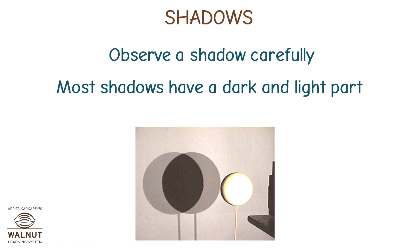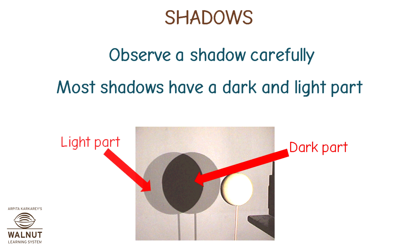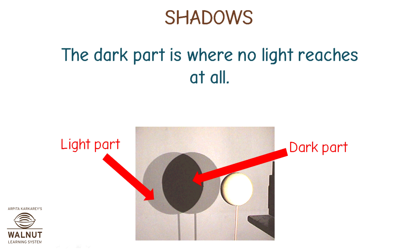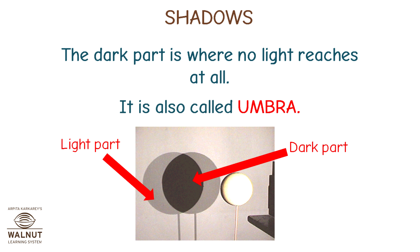Observe a shadow carefully. Most shadows have a dark and light part. The dark part is where no light reaches at all. It is called umbra.